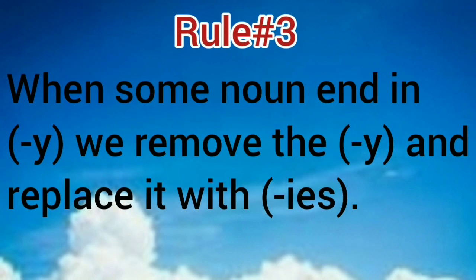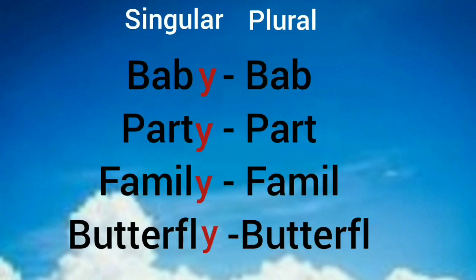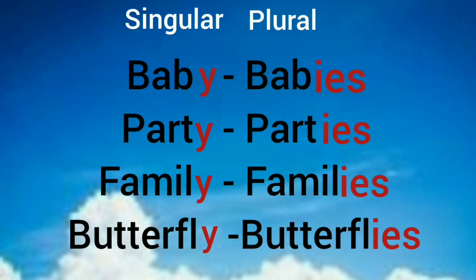When some nouns end in -y, we remove the -y and replace it with -ies. Examples: baby-babies, party-parties, family-families, butterfly-butterflies. In all these words we have dropped -y and added -ies.